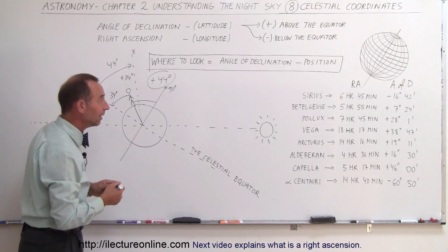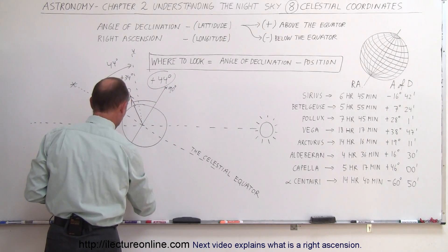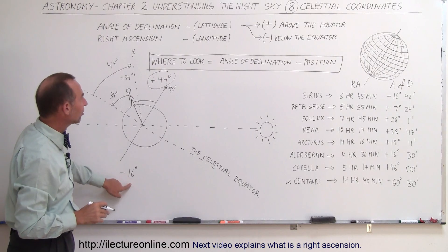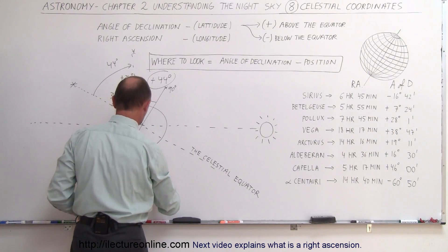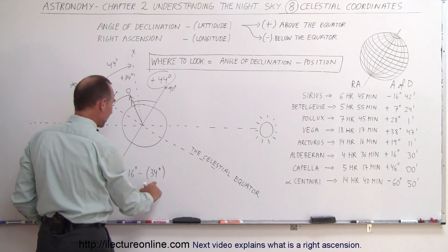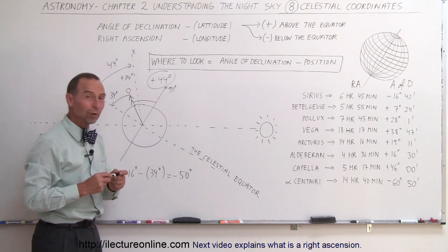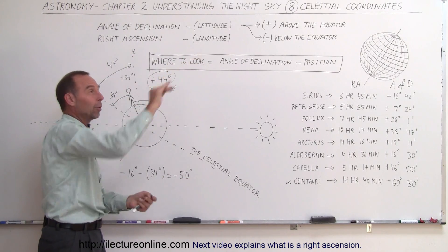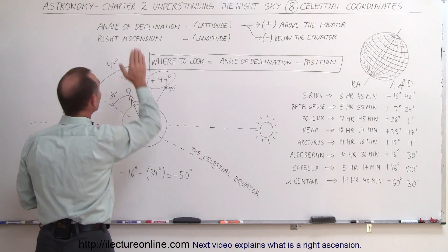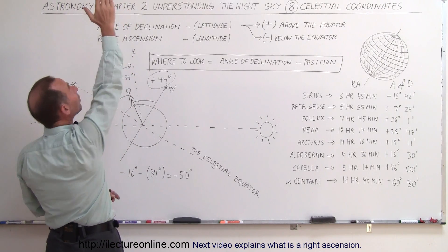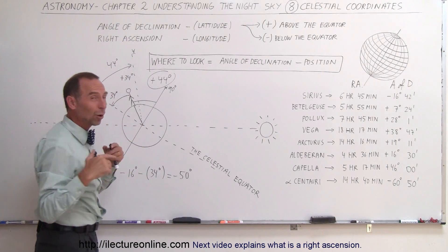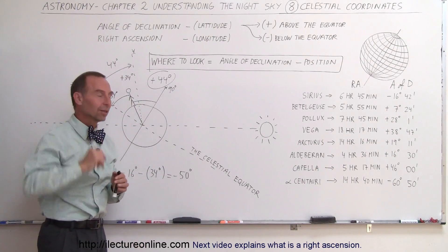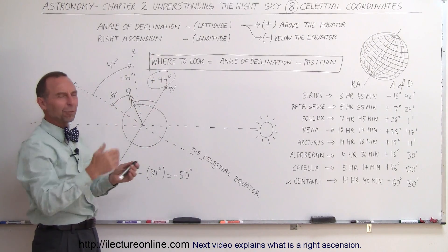Let's try finding Sirius, the brightest star in the sky. We take its angle of declination, minus 16 degrees, and subtract our position of 34 degrees: minus 16 minus 34 equals minus 50 degrees. Negative means I look toward the south. 45 degrees is halfway between zenith and horizon, so 50 degrees is a little further down. I have to look toward the south at a 50-degree angle below the zenith — or equivalently, 40 degrees up from the horizon.